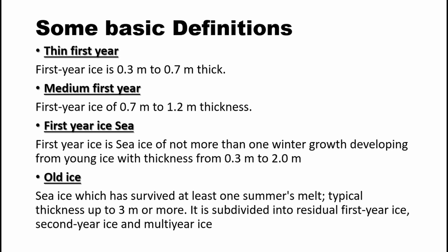First year ice which is 0.3 to 0.7 meters thick is known as thin first year ice, whereas first year ice which is 0.7 to 1.2 meters in thickness is known as medium first year ice. Polar regions have continuous sunlight for a period of nearly 6 months approximately on each pole. Sea ice which has survived at least one summer's melt with thickness being 3 meters or more is known as old ice. Old ice is further divided into residual first year, second year, and multi-year ice depending on its ability to survive the summer melt each year. You were able to observe the flowchart which I drafted to show the different categories of ice.